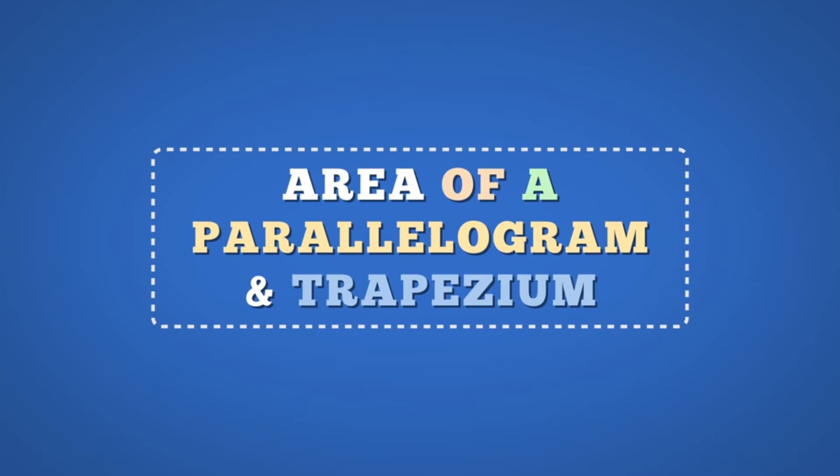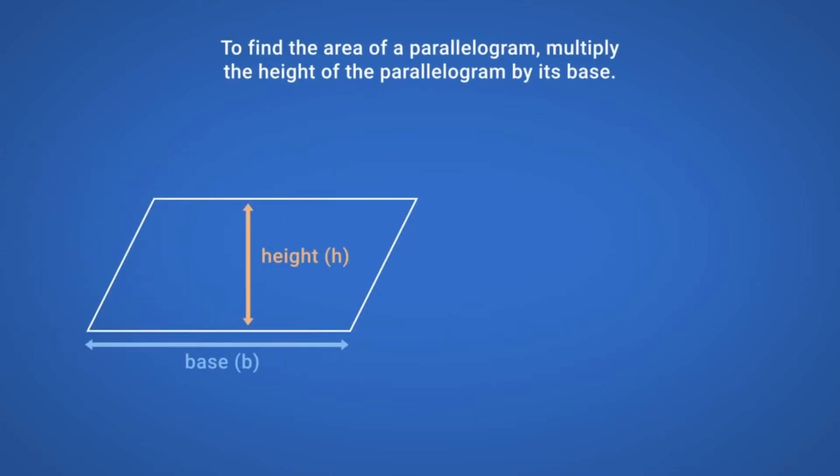Area of a Parallelogram and Trapezium. To find the area of a parallelogram, multiply the height of the parallelogram by its base. The formula for finding the area of a parallelogram can be written in words or in symbols.